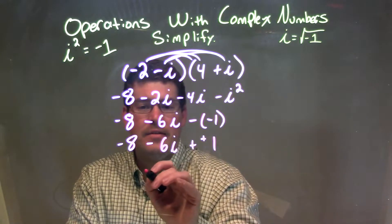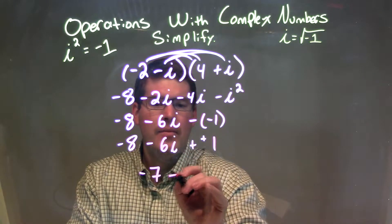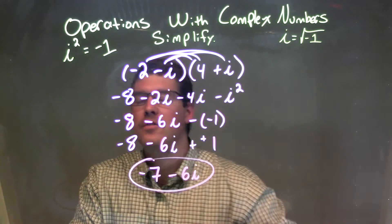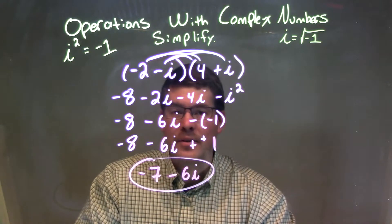Negative 8 plus 1 is negative 7. So we have negative 7 out here. And then we bring down the minus 6i. And there we have it. Our final answer here is just negative 7 minus 6i.